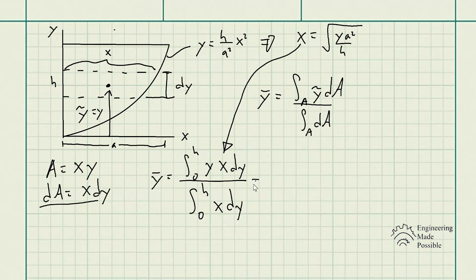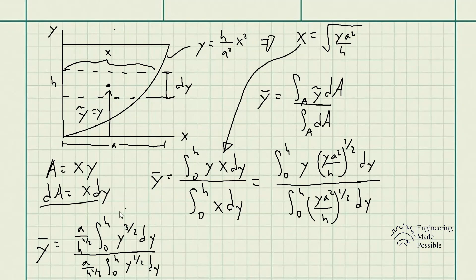So we're actually able to remove the constants here, which is a divided by square root of h here. And we see for both the numerator and the denominator, we have the same. So these constants actually cancel out. And we have the integral of y to the power of 3 halves dy and the integral y to the power of 1 half.